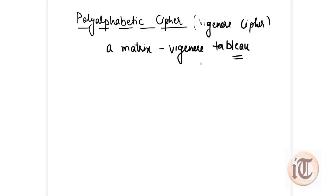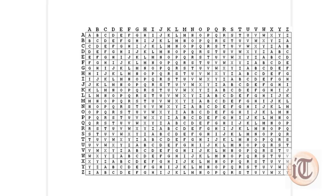First, we will discuss how the Vigenère tableau is constructed, and later we will take an example and construct the cipher text using polyalphabetic cipher. The Vigenère tableau contains 26 alphabets from A to Z. To construct this table, we apply a one-bit left shift — the first row starts from A, the next starts from B, then C, and so on, giving us 26 rows and 26 columns.